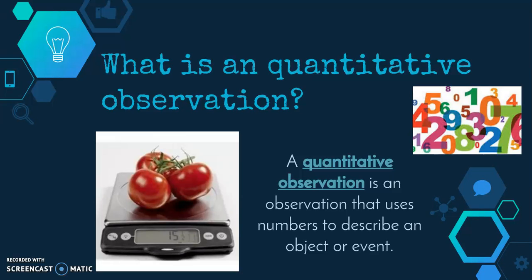No one can argue with you about the fact that there are three tomatoes in the picture. Other quantitative observations might be things like the mass of the object that you're observing, or possibly the length, circumference, weight, or temperature. All of those are observations that involve numbers that no one would be able to dispute looking at the data. Oftentimes our data tables get converted into graphs to help us create a clearer picture of whatever it is that we've made observations about.